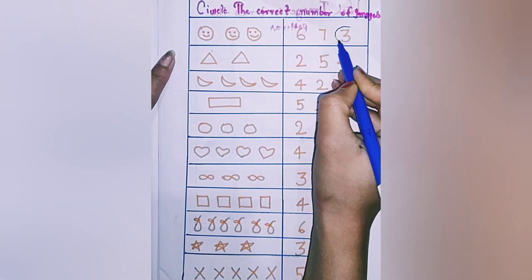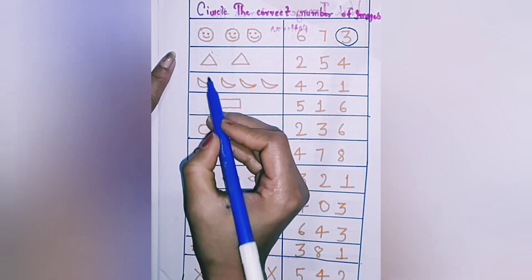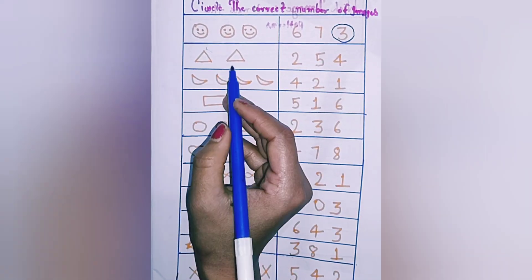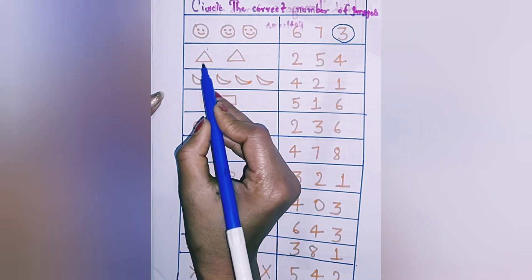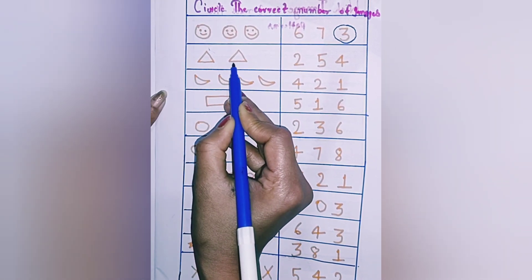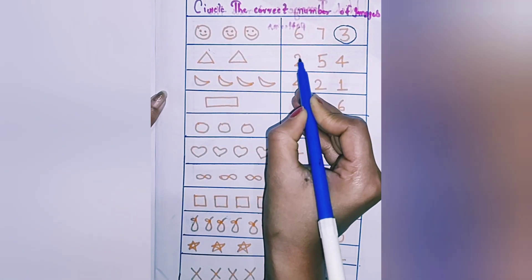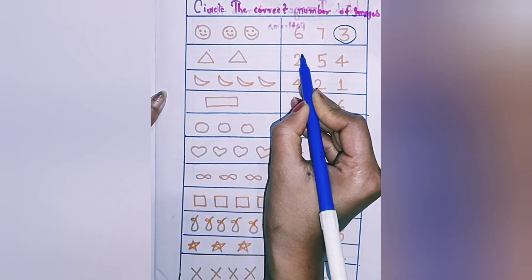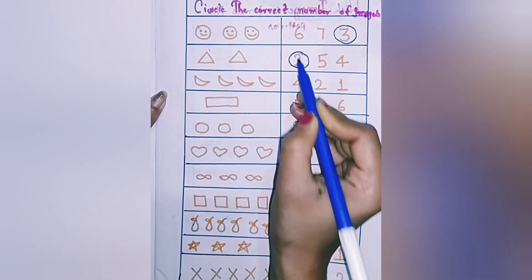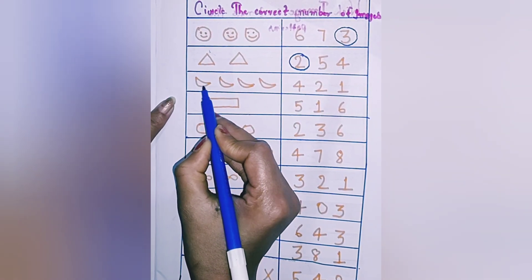Now count again. How many triangle is there? One and two — there are two triangles. Circle two.